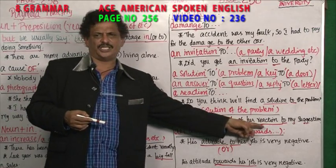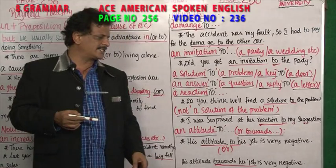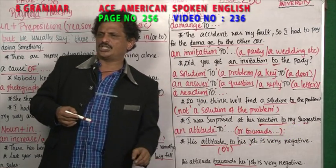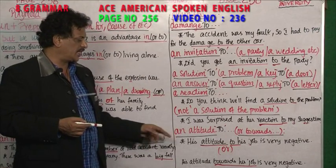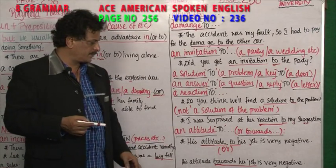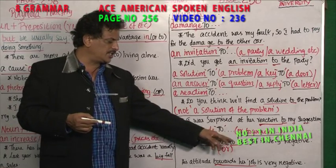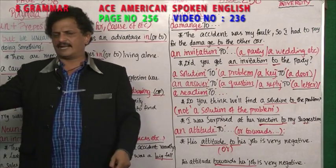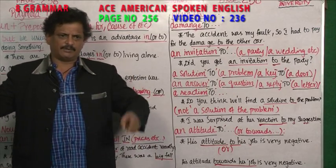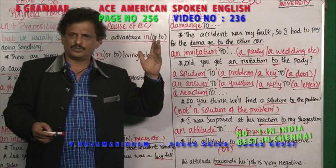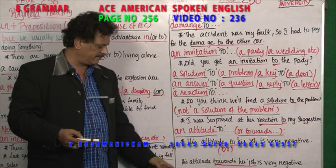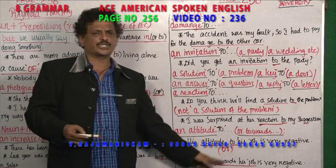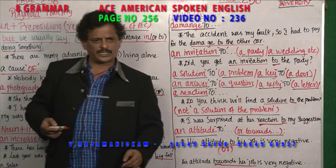I was surprised at a reaction to my suggestion — after 'reaction' you are using the preposition 'to'. Reaction to my suggestion. And attitude to — his attitude to his job is very negative. His attitude towards his job is very positive. You can use 'towards' also as a preposition.